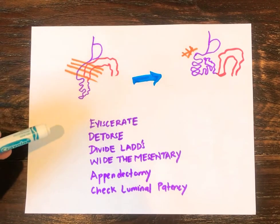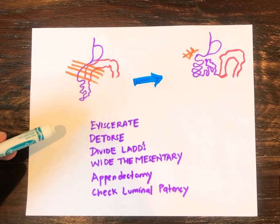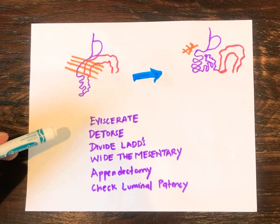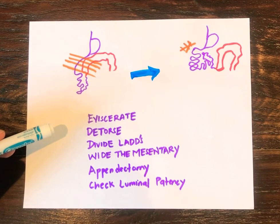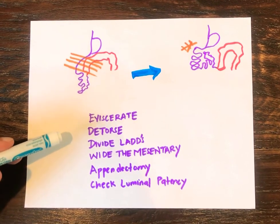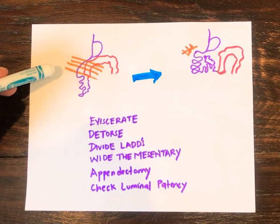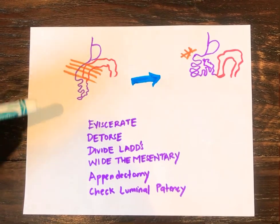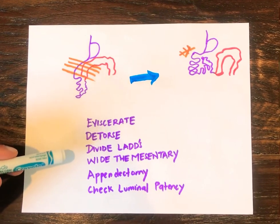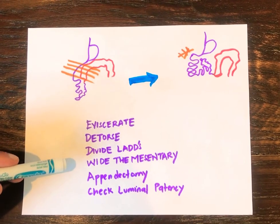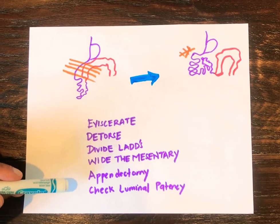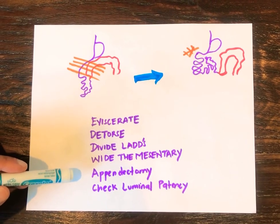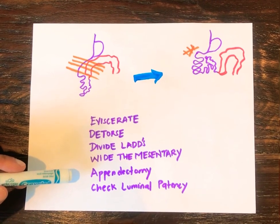The principles of the operation are: number one, you're going to eviscerate the abdomen and get the bowel out; detort the bowel; then divide the Ladd's bands; then widen the mesentery so that it doesn't curl on its own; check the luminal patency to make sure the lumen is all patent; and don't forget to do an appendectomy.